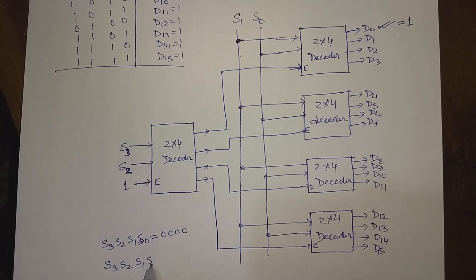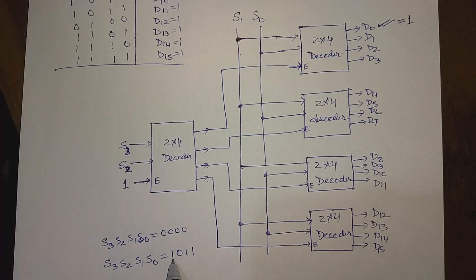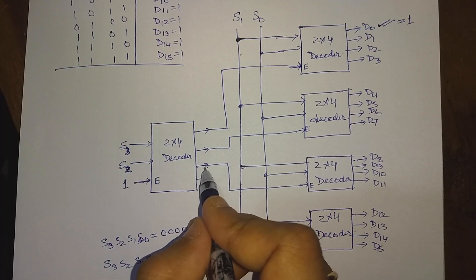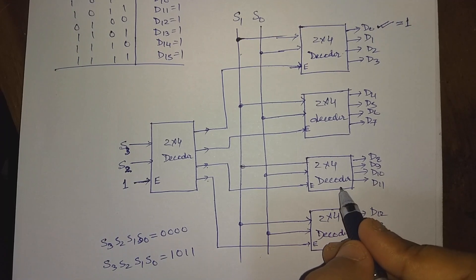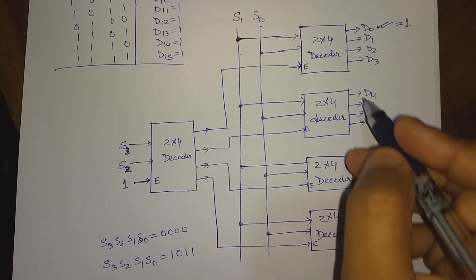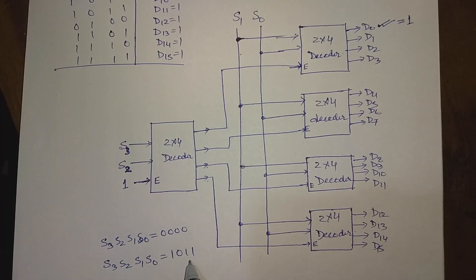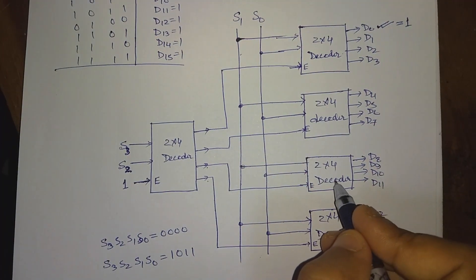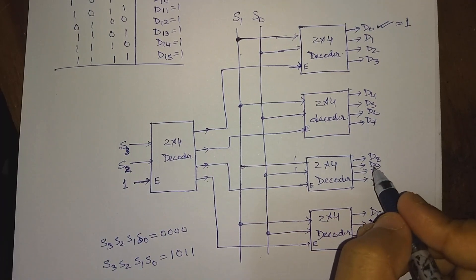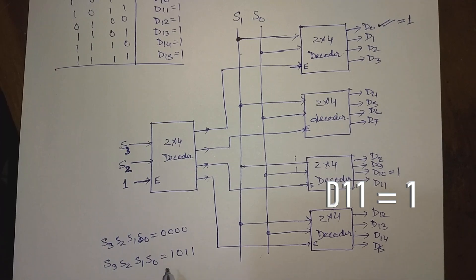Now let us take another example: S3, S2, S1, S0 equal to 1 0 1 1. For these values, S3 and S2 are 1 0, so the third output port will be high. That means we will receive a 1 there, and this 1 will be connected to the enable input of the third decoder. Therefore this decoder will give output and all the other three decoders will be off. To know which output will be receiving 1, we have to see the S1 and S0 value, which is 1 1. So with S1 S0 equal to 1 1, we will get the last output of the third decoder high. All the other outputs will be 0 for this case.